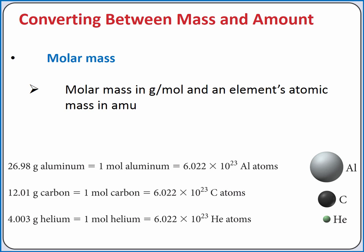Likewise, carbon's atomic mass is 12.01 atomic mass units. So, 12.01 grams of carbon is one mole of carbon atoms. We can use an element's molar mass any time we want to convert between mass and moles.